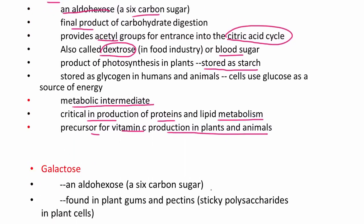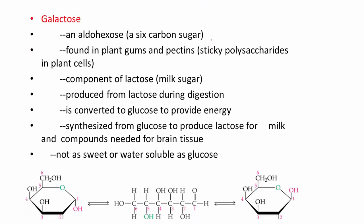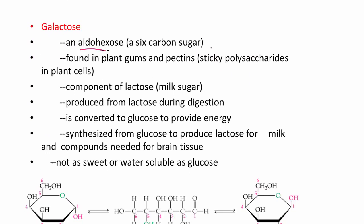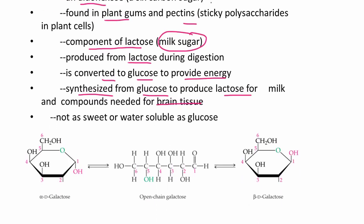Galactose is an aldohexose found in plant gums and pectins. It's a component of lactose, known as milk sugar, and is produced from lactose during digestion. Lactose is converted to glucose to provide energy. Galactose is synthesized from glucose to produce lactose for milk and other compounds needed for brain tissue. Galactose is not as sweet or as water soluble as glucose.